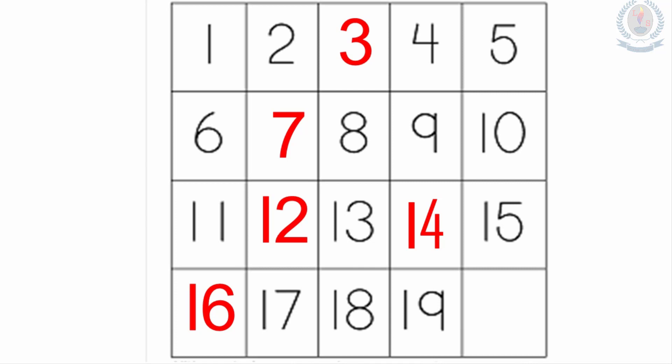That is number 20, 2 and 0. So here we have: 1, 2, 3, 4, 5, 6, 7, 8, 9, 10, 11, 12, 13, 14, 15, 16, 17, 18, 19 and 20.